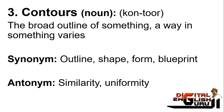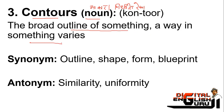The third word is 'contour' or 'contours,' which is a noun meaning an outline or defined shape — a defined boundary or form. It refers to the broad outline of something, the area where something varies. Synonyms include outline, shape, form, and blueprint. Contour is frequently used in newspapers to mean planning or shaping something.